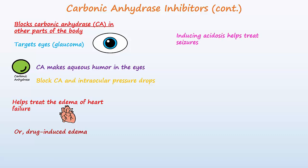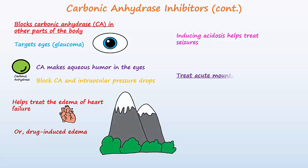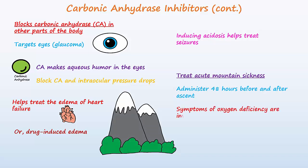Acetazolamide is also approved to prevent and treat acute mountain sickness. If taken 48 hours before the ascent to altitude, and then again after the ascent, symptoms of oxygen deficiency, like cramps, weakness, and headaches, are improved. Induction of metabolic acidosis by this drug causes the respiratory system to attempt to compensate by increasing respiratory rate, which then leads to more rapid altitude acclimation for the climber.